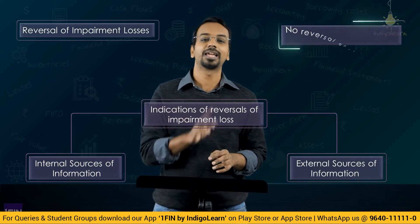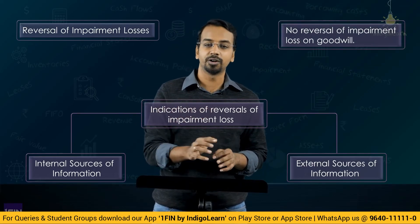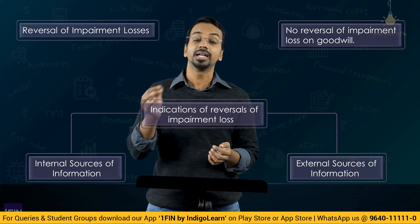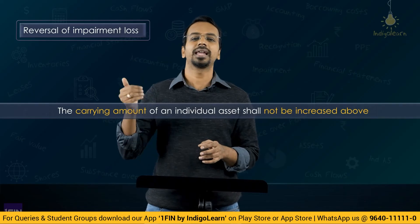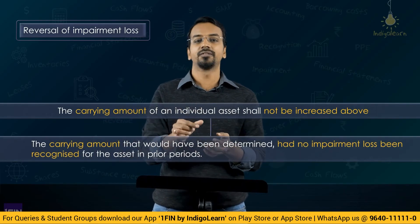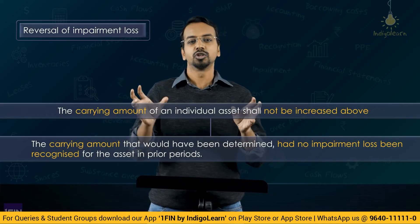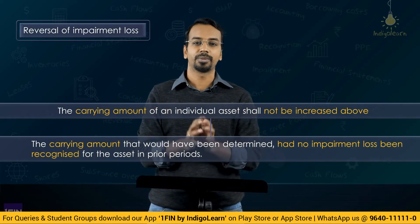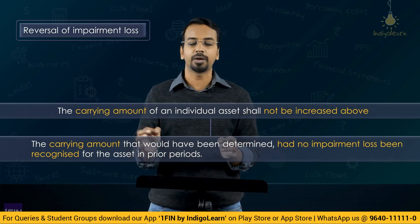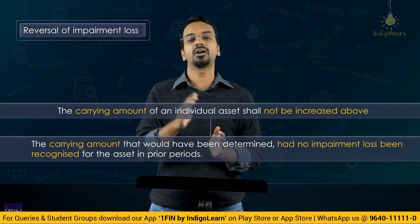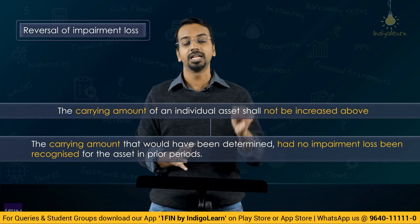Very importantly, impairment loss on goodwill cannot be reversed. You will have to allocate the reversal amongst the remaining assets in the ratio of their carrying amount. One more check: calculate the carrying amount of the specific asset assuming there has been no impairment, and ensure that after reversal, the carrying amount of that asset should not be greater than the carrying amount had there been no impairment. The maximum amount of reversal of impairment loss equals the difference between the carrying amount without charging impairment and the carrying amount after charging impairment loss. Beyond this, you cannot reverse the impairment loss, and for goodwill, you cannot reverse at all.